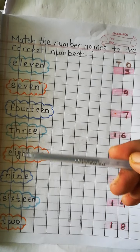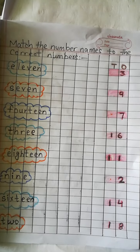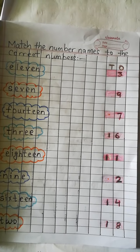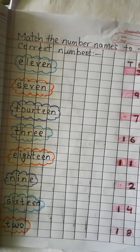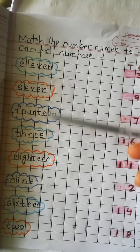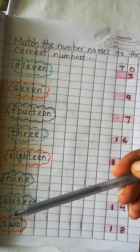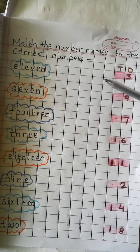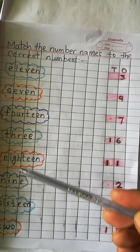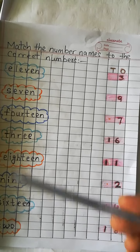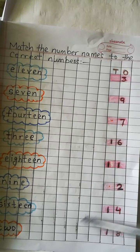So children, here I have given some number names, and on the other side I have given some numbers. Firstly we have to spell these number names, and then we will find the number on the other side. After that we will match the number names to the correct number. So let's start.